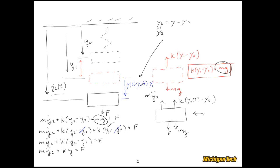And y is a function of time, but y1 is not, I get that. So this equation gives me the m y double dot.